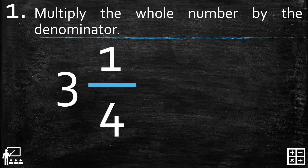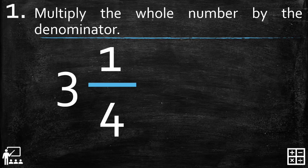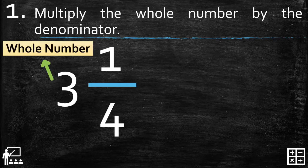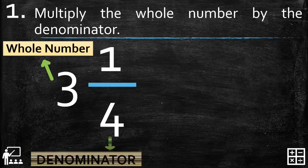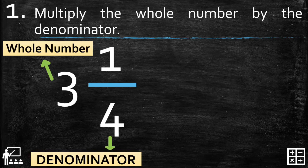I have here 3 and 1/4. On the first step, multiply the whole number by the denominator. Before we multiply, let's identify the whole number and the denominator on the mixed number. The whole number on this mixed number is 3 and the denominator is 4.